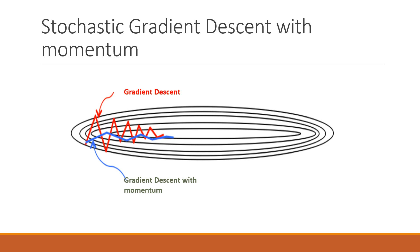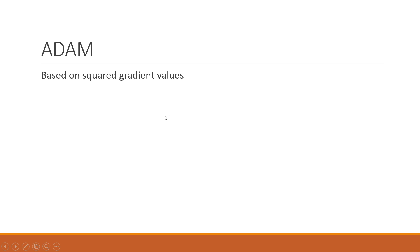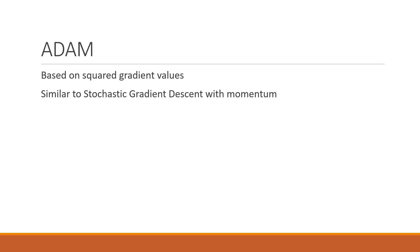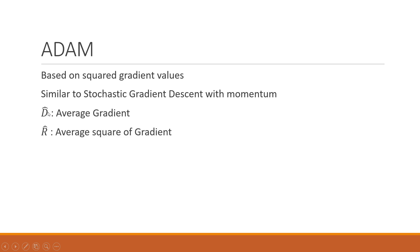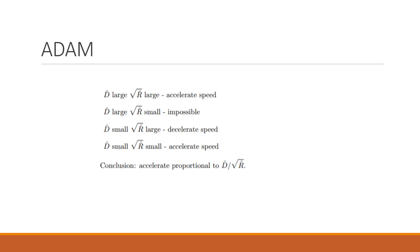Now we talk about the main topic: the intuition behind Adam. It is quite similar to stochastic gradient descent with momentum, but one additional difference is that it is based on squared gradient values. I will use two notations: d-hat, which represents the average gradient, and r-hat, which represents the average of the squared gradient.